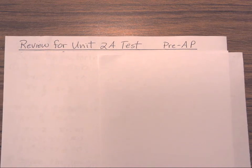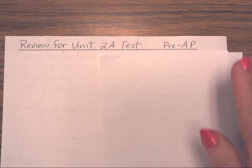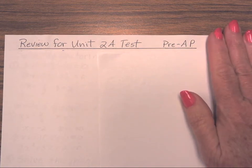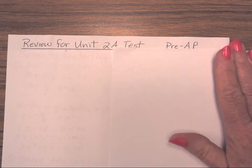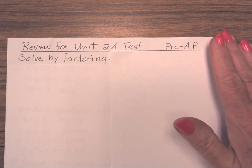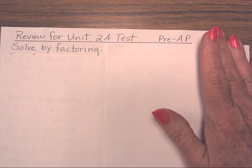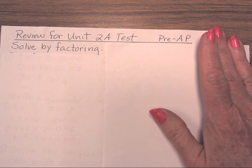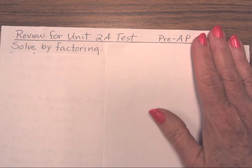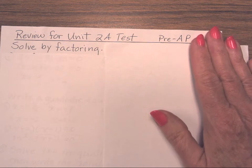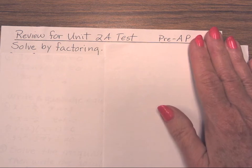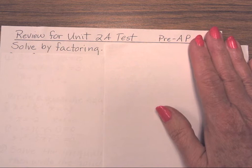Here is our review for your Unit 2A test. The very first thing you're going to be doing is solving by factoring. As you're going through this, if you're working independently, you should look at the first problem, stop the video, try it on your own, and then check your answer, and then go to number 2 and do the same thing all the way through. It is by doing that that you will truly know if you understand how to do all the problems for your test.